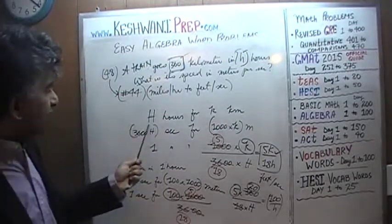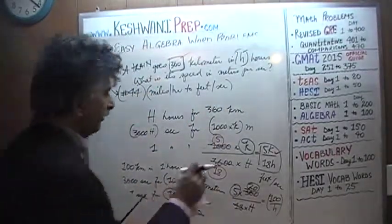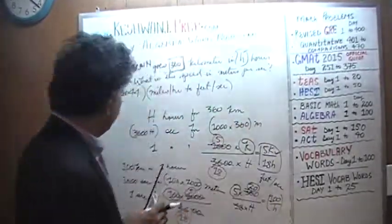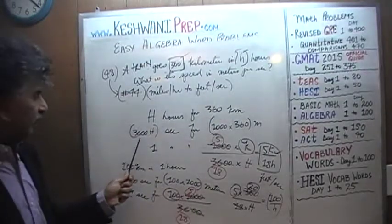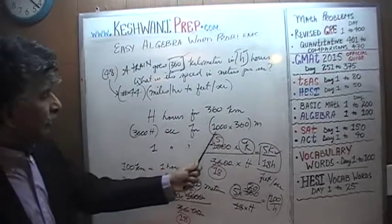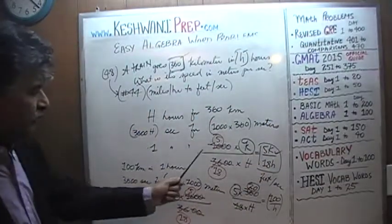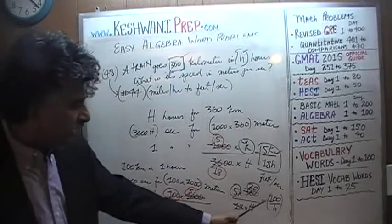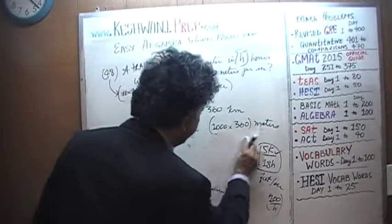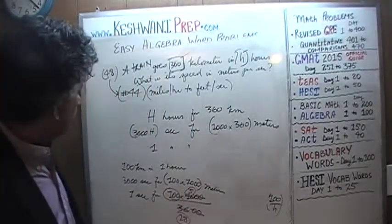And at the bottom we still have this H. So it translates to 100 over H. Let's see if we can get that by doing our work. So now we are taking H hours for 360 kilometers, which means it's going to be 1,000 times 360 meters. H hours for 360 kilometers, which is same as 3600 times H seconds for 1,000 times 360 meters. So in one second we are going to go, I'm going to erase all of this thing, we're going to do the calculation, and we better get 100 over H.